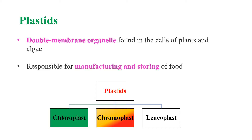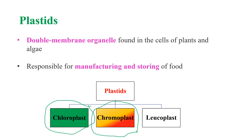Plastids are of three types: chloroplast, chromoplast, and leukoplast. Chloroplasts are green colored plastids, chromoplasts are yellow, red, or orange colored plastids, and leukoplasts are colorless plastids.